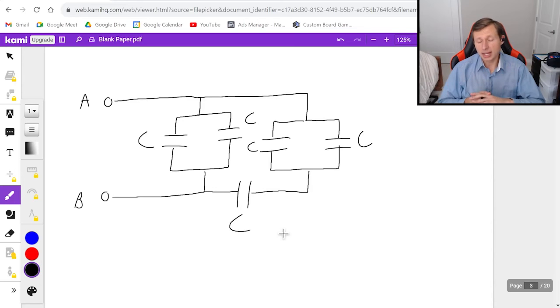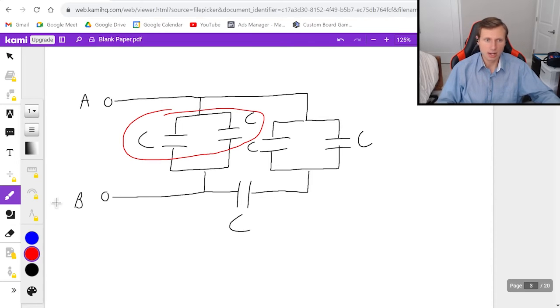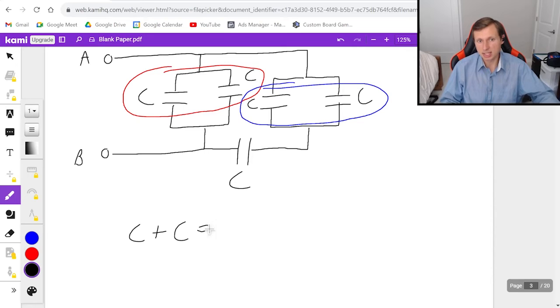So then here's what I'm going to do first. I need to combine two capacitors. Doesn't always have to be two but in this case I'm going to combine these two right here. And if I want to, all in the same step I can also combine these two as well. Since they're both in parallel and they're not technically connected to each other it's going to be fine. So remember since they're in parallel it's just going to be simple addition. C plus C equals 2C. Both of them are going to have values of 2C.